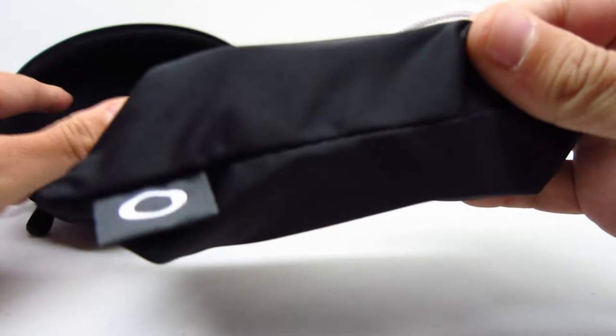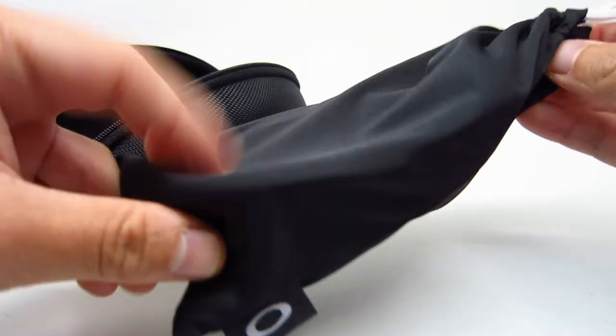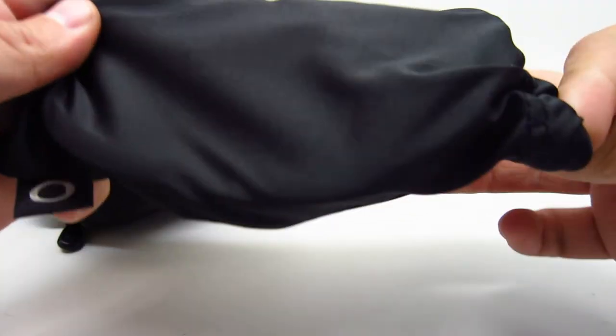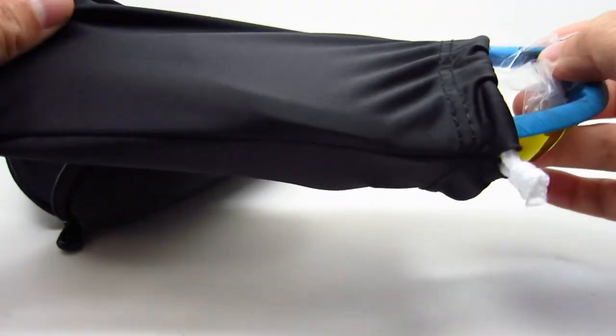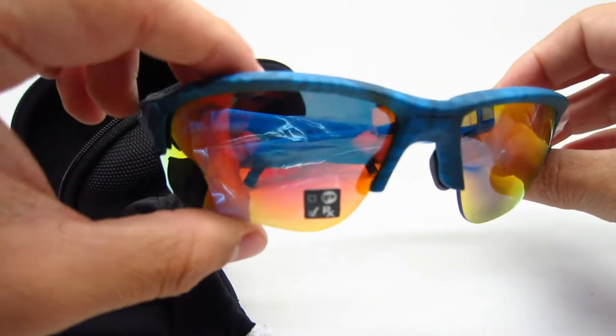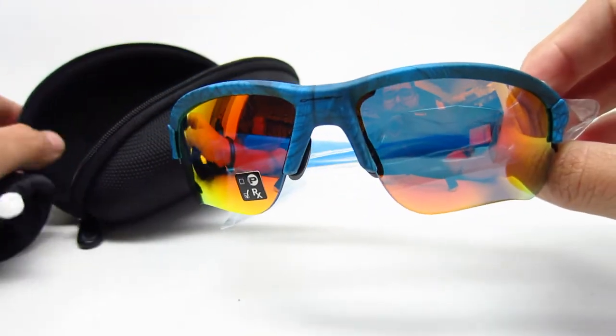Inside we get the cloth slash pouch case. This is your cloth as well as a case, a soft case. I mean cool, that's a cool looking frame.